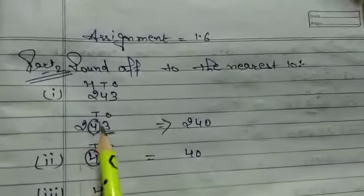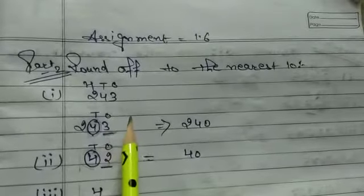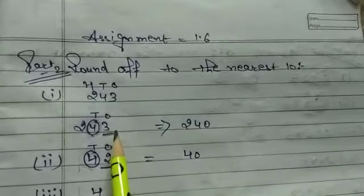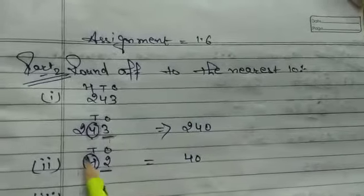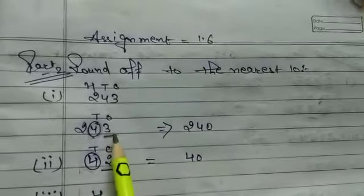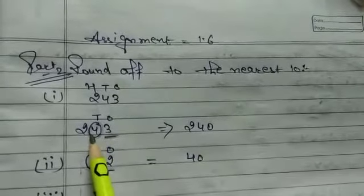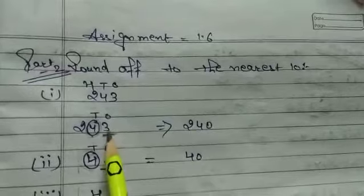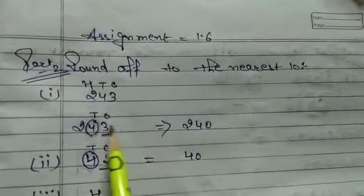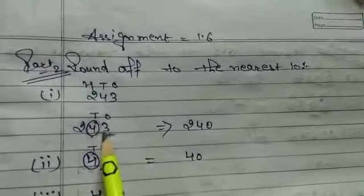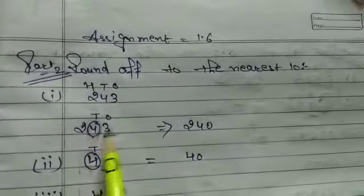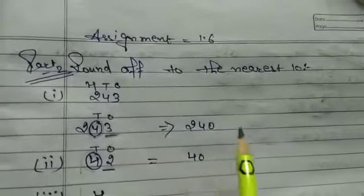After circling the 10s place, check whether the next digit is greater than 5 or smaller than 5. Now 3 is smaller than 5, so you will not add anything. Then 4 stays as 4. You will have an answer of 240.